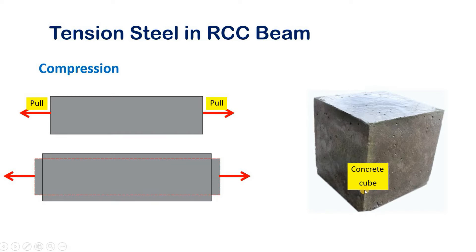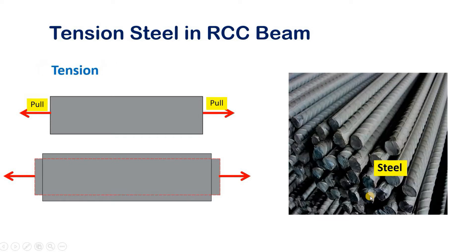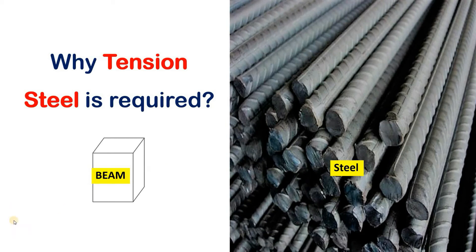Concrete cannot take tension loads because when concrete is pulled by a load it causes cracks, since it is weak in tension. Now the question is: which material can take tension load without any crack? The answer is steel. Since steel is a ductile material, it can take tensile loads, but it cannot take compressive loads.